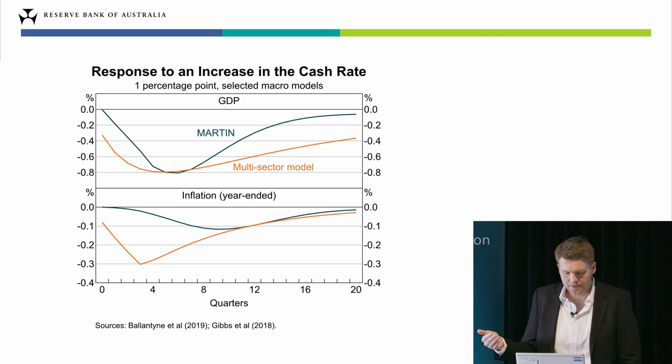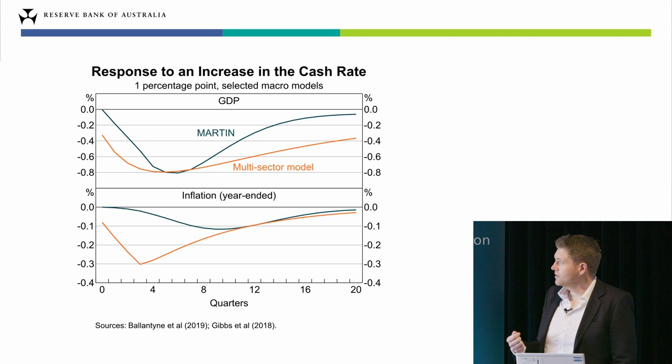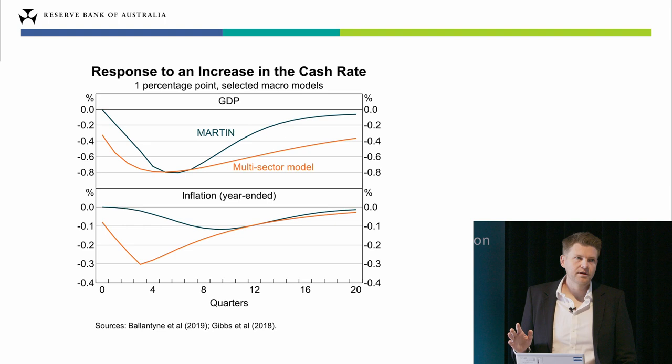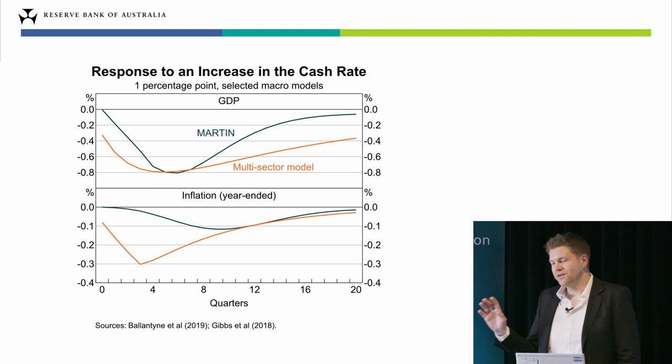That doesn't necessarily mean GDP will fall, but rather that GDP will be running lower than it otherwise would have been had we not increased the cash rate. Looking at the bottom panel, a higher cash rate also acts to reduce inflation. The effects on inflation are a little smaller than the effects on GDP and come through with a longer lag, but all of this is consistent with the standard textbook description: the cash rate goes up and then, at some point in the future, economic activity and inflation go down.